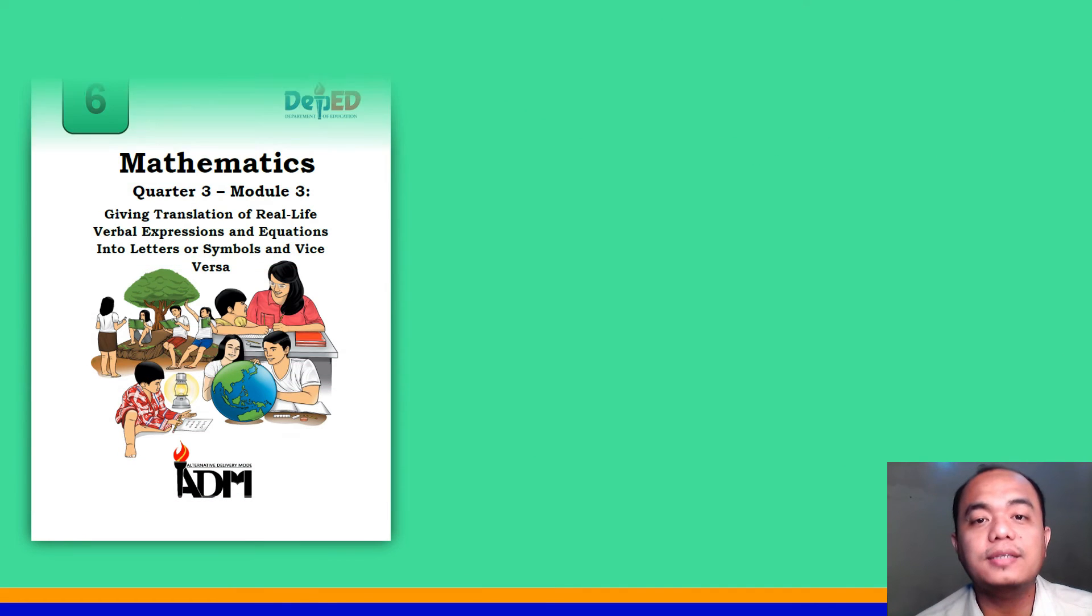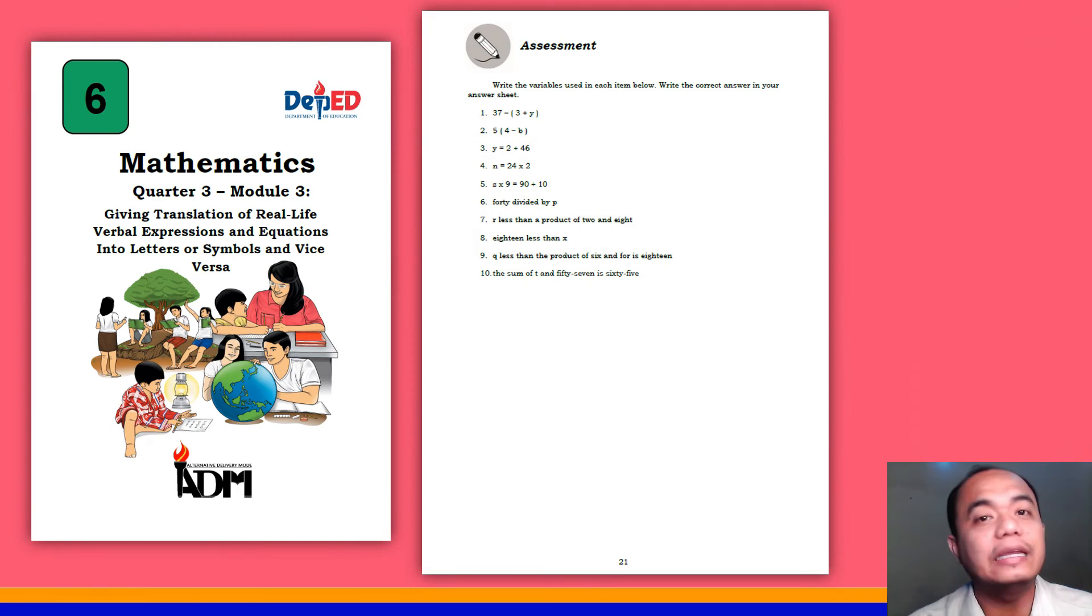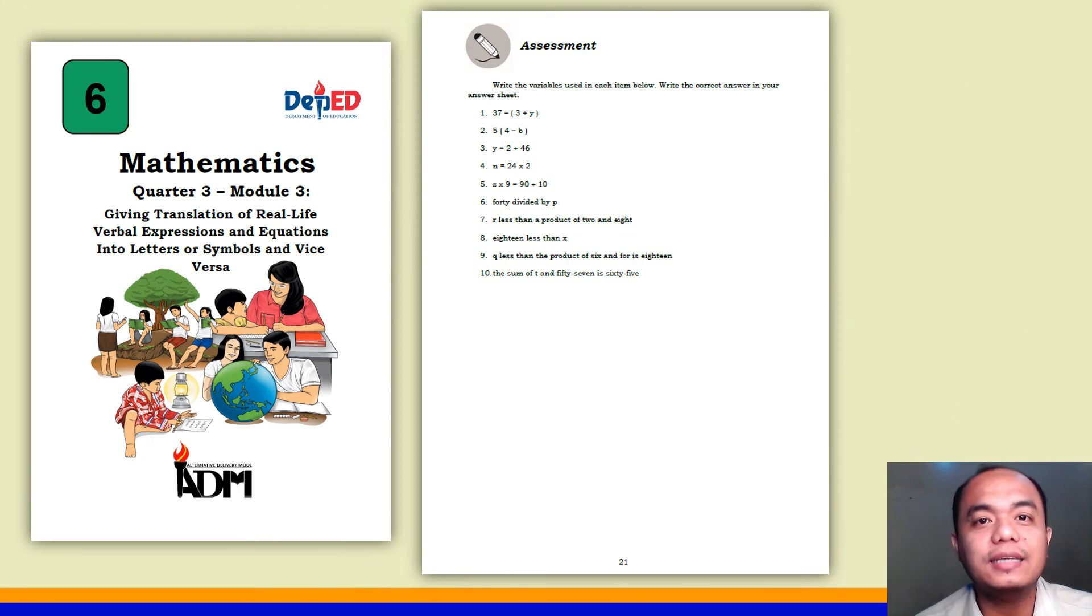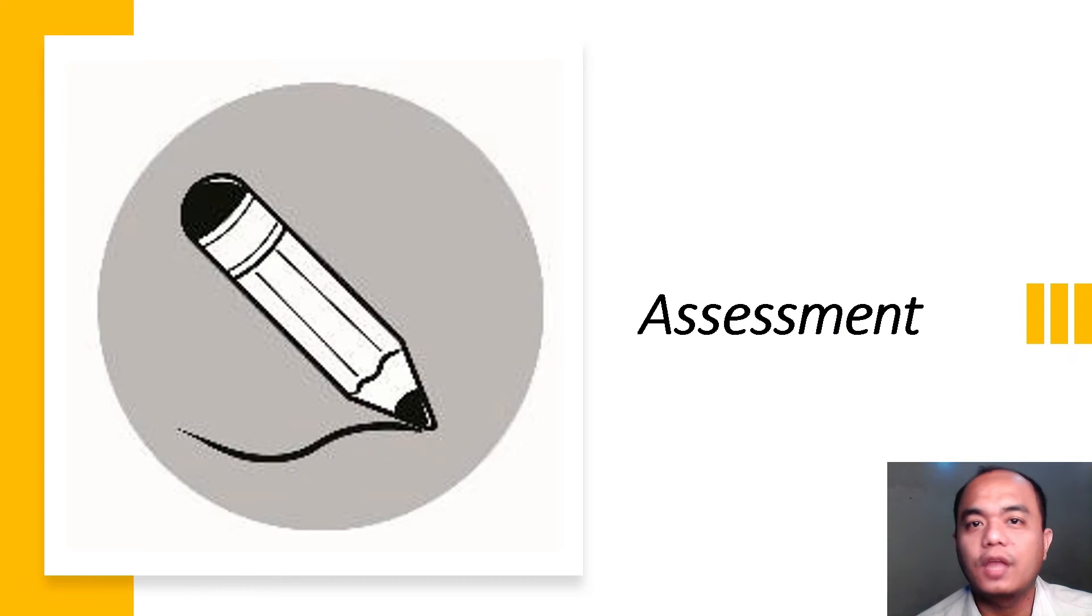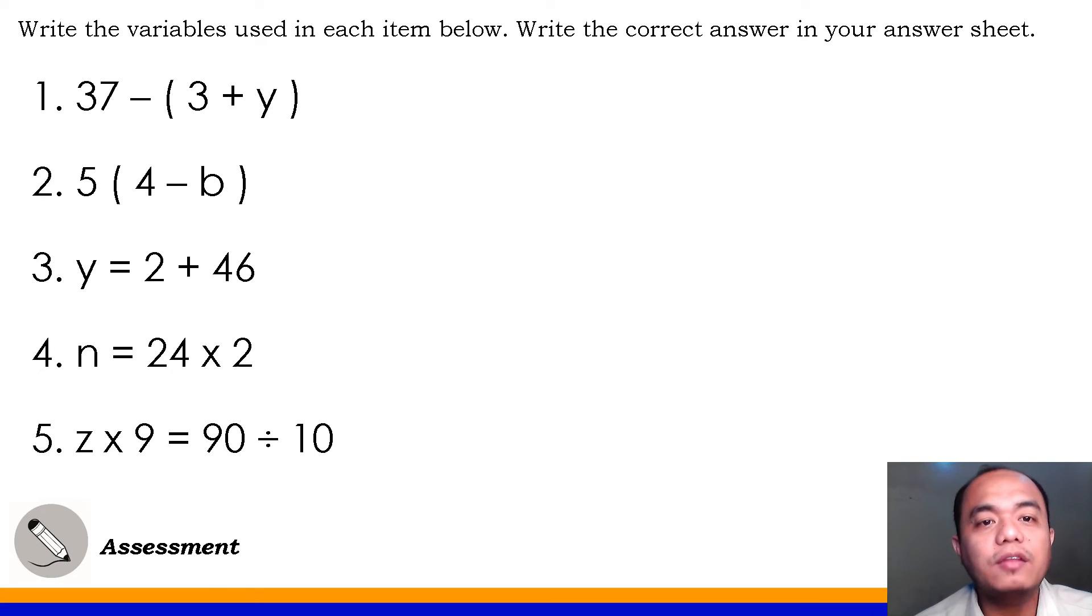Let's answer the assessment part of your lesson 2 still in your module 3 for mathematics 6 quarter 3. Do you have with you your answer last time about this assessment? Okay, very good. For your assessment, write the variable used in each item below. So, it's very easy, right? You'll just write the variable used per item. Number 1, what's your answer? The variable is, very good, it's Y. Next, number 2, what variable is here? Obviously, that's B.